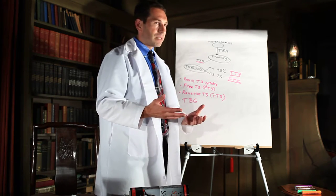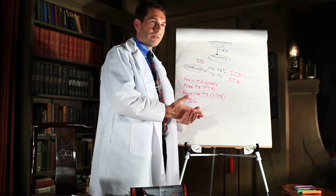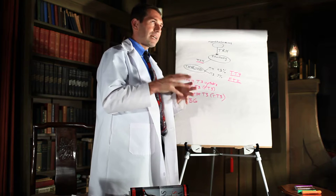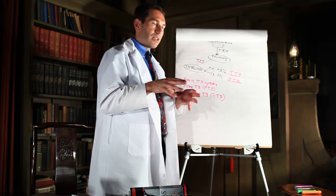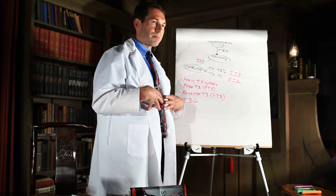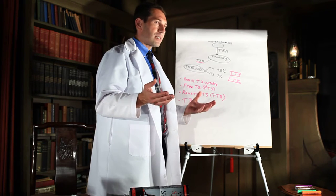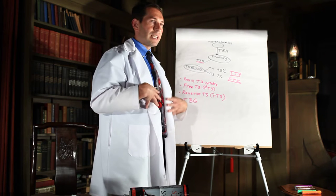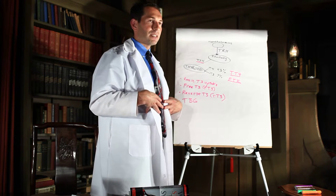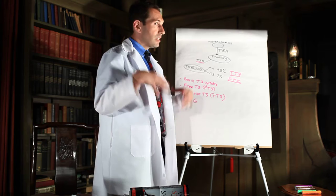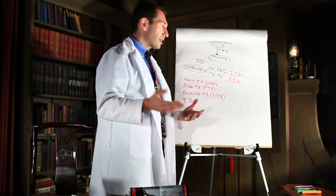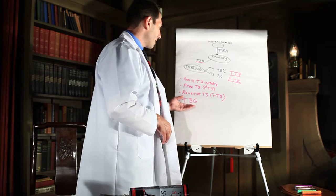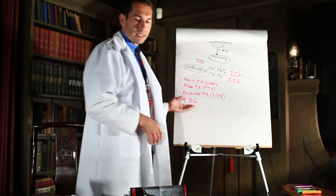A thyroid problem is never just a thyroid problem — the only place where you can properly digest and absorb protein is the stomach. 80% of digestion happens in the stomach, then you absorb it in the small intestine. Since protein metabolism and digestion take place in the stomach, you'd better have proper stomach function, otherwise you won't have the proper levels of thyroid binding globulin.